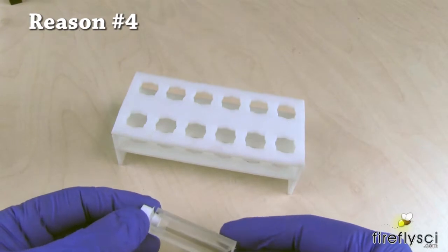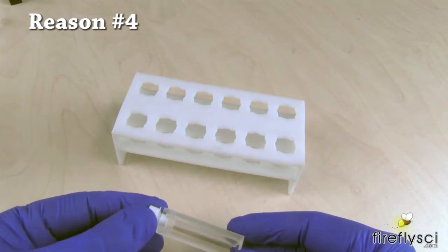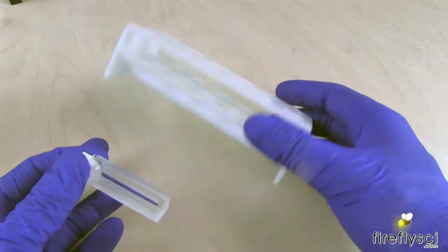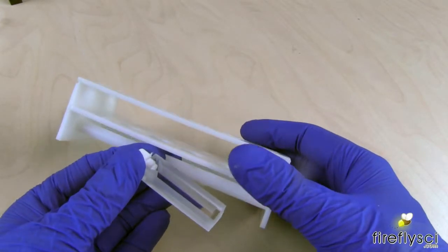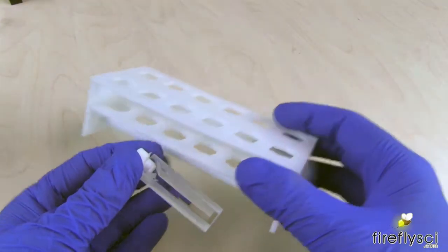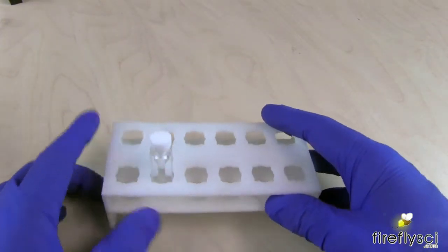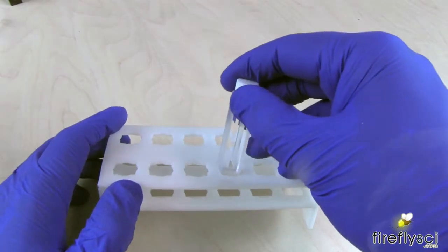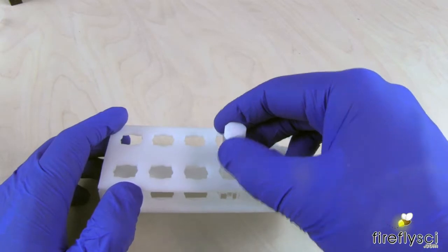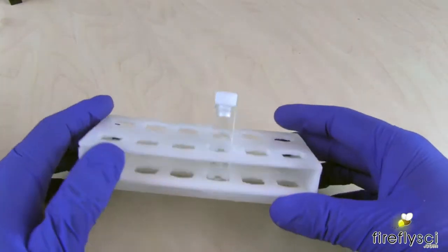Reason number four, won't scratch your cuvettes. All the Firefly-sized cuvette racks are made out of small polypropylene plastic, which is great because this material won't scratch your cuvettes. Only the corners and the bottom of the cuvette come in contact with the cuvette rack, so the optical faces are protected.